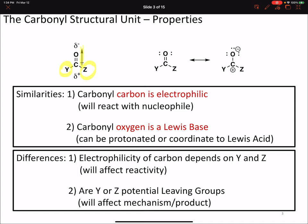If either Y or Z, or potentially both, are leaving groups, that's going to affect the outcome of the reaction. It will affect the mechanism, the product formed. So these are all things that we're going to want to remember as we move forward and examine the wide range of functional groups that contain the carbonyl carbon.